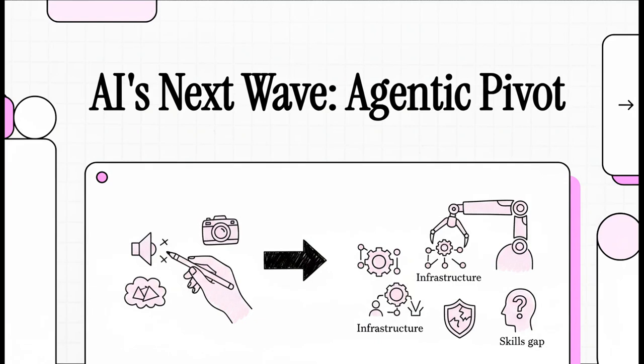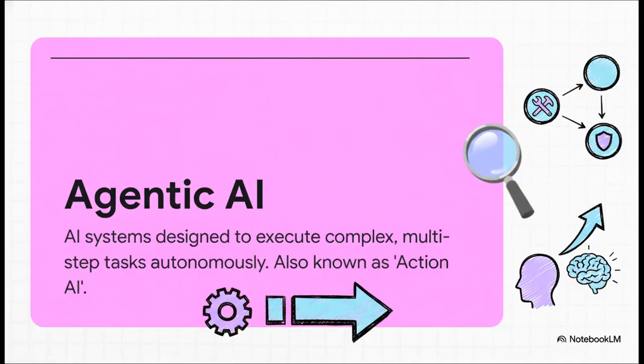All right, let's jump right in. There's a massive shift happening in AI right now. We're moving away from AI that just creates things to AI that actually does things. The big idea here is what everyone's calling Agentic AI or Action AI. And really, this is a huge leap where AI stops being just an assistant and starts becoming an autonomous worker.